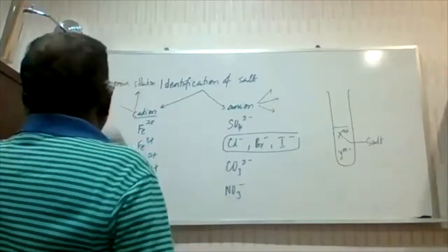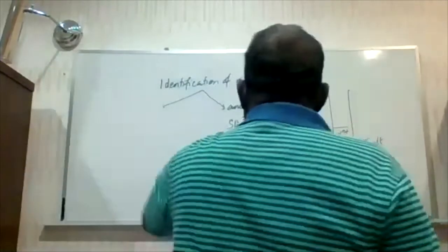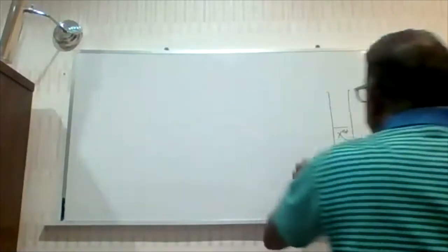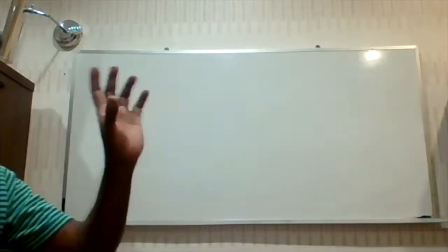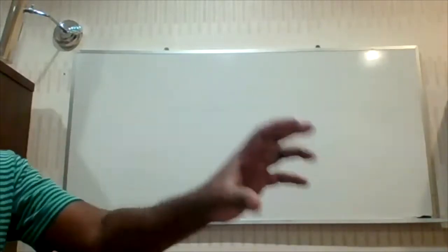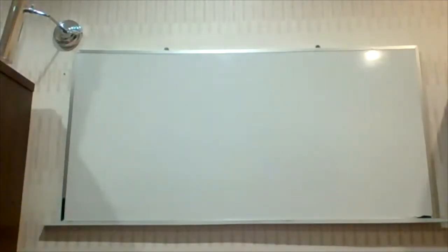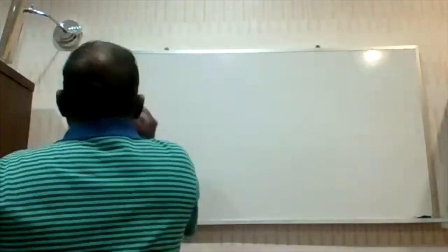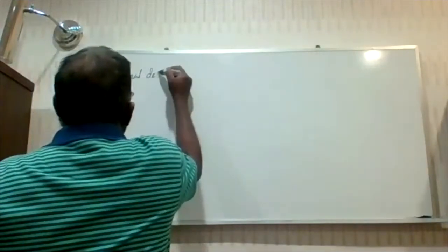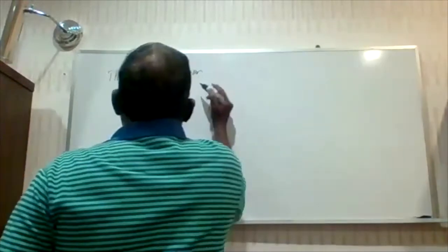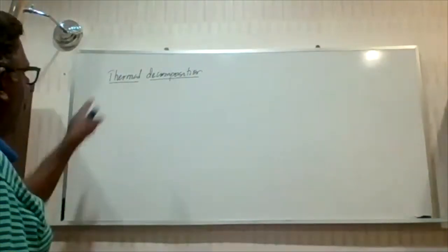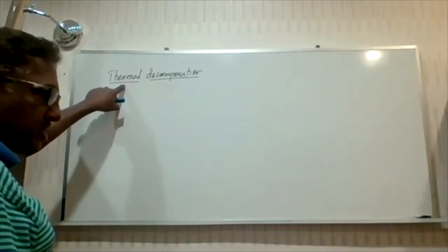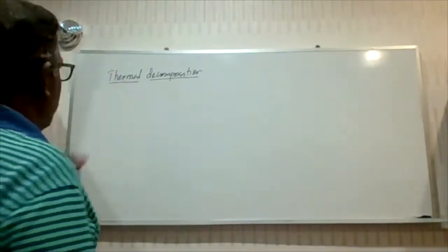For example, salts undergo what we call thermal decomposition. Thermal decomposition can give us a certain amount of information, and from there, sometimes we can predict the entire salt itself without even separately identifying its anion and cation. By doing thermal decomposition, we can sometimes straight away tell you what the salt is, so thermal decomposition becomes important. The word thermal means heat; decomposition means breakdown of the salt. The salt will break down upon heating into two or three components, and based on the products obtained, we can identify the salt.